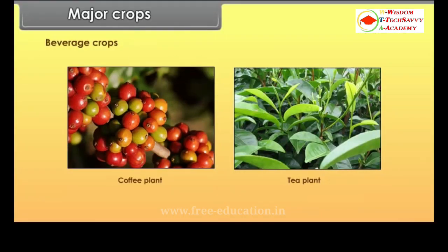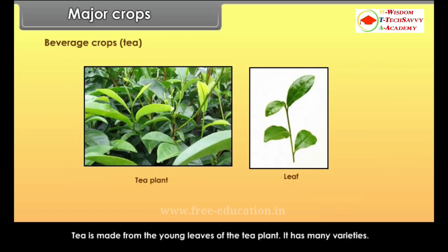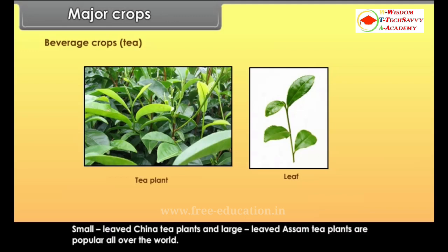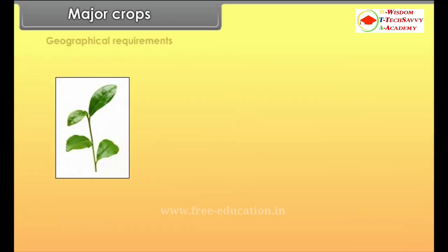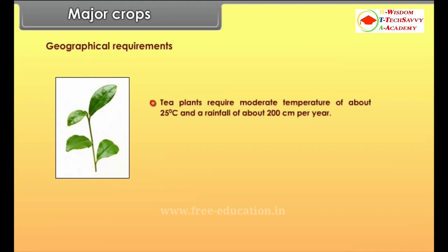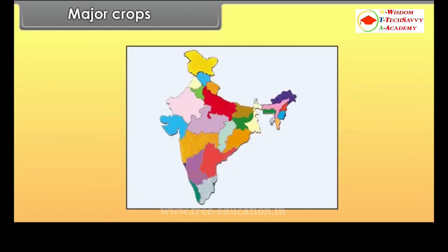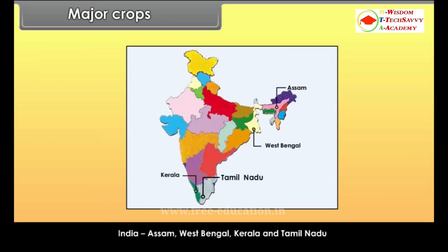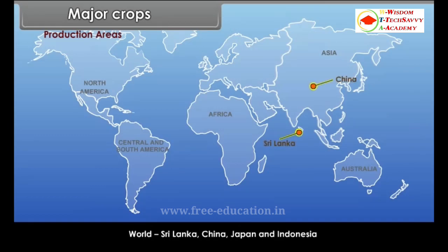Beverage crops include tea and coffee. Tea is made from the young leaves of the tea plant and has many varieties; small-leaved China tea plants and large-leaved tea plants are popular all over the world. Tea plants require moderate temperature of about 25 degrees Celsius and a rainfall of about 200 centimetres per year. Well-drained hilly slopes grow most of the tea. Major producing states in India include Assam, West Bengal, Kerala and Tamil Nadu. World producers include Sri Lanka, China, Japan and Indonesia.